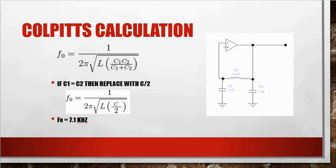Colpitts calculation, the initial calculation is quite scary. It uses C1 times C2 divided by C1 plus C2. That is if C1 and C2 are different values. We're going to use a simple version where C1 equals C2, and then we just replace this mess of a formula with C over 2.